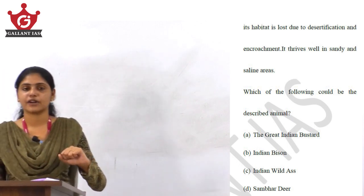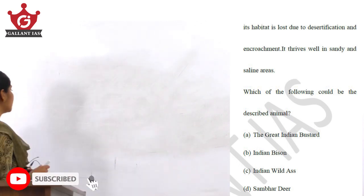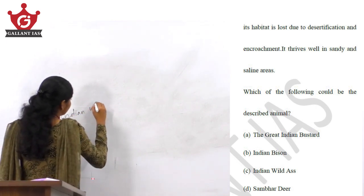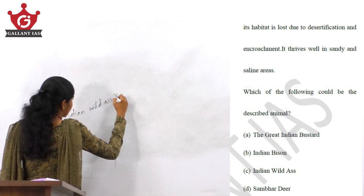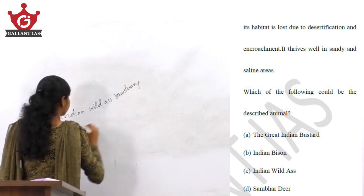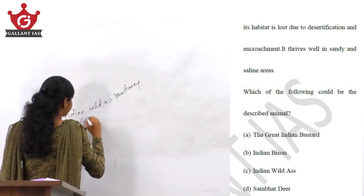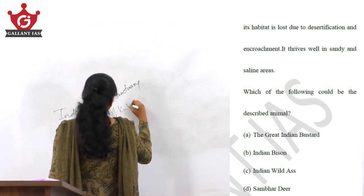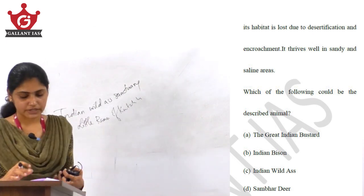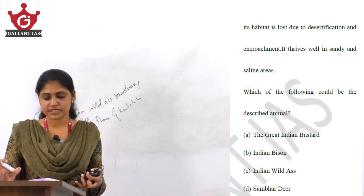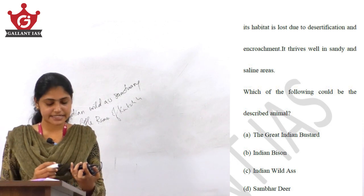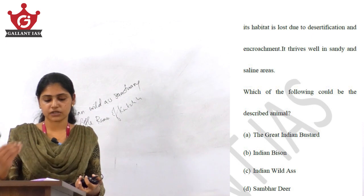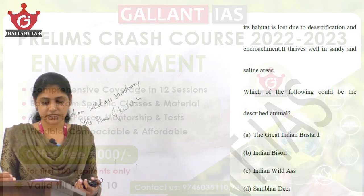The last individuals of its population are now inhabiting the Indian Wild Ass Sanctuary, which is situated in the Little Rann of Kutch. If you know about this sanctuary and its location, you can relate it to the statement about sandy and saline areas and conclude the answer is option C, Indian Wild Ass.